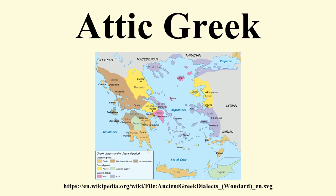This new system, also called the Euclidean alphabet after the name of the Archon Euclides who oversaw the decision, was to become the common classical Greek alphabet adopted throughout the Greek-speaking world. The classical works of Attic literature were subsequently handed down to posterity in the new Ionic spelling, and it is this classical orthography in which they are read today.